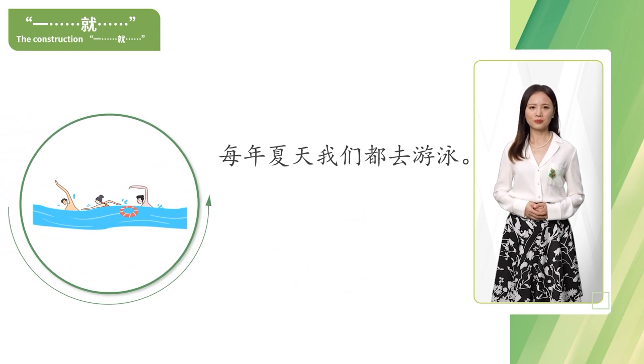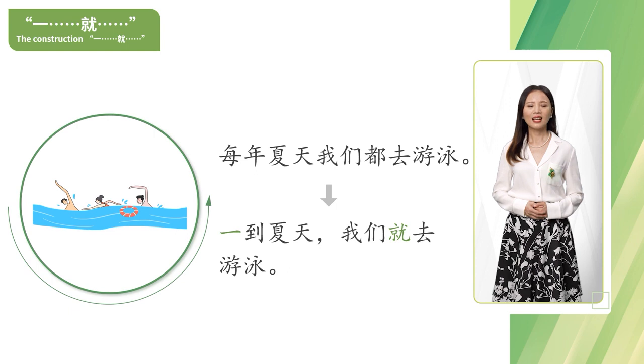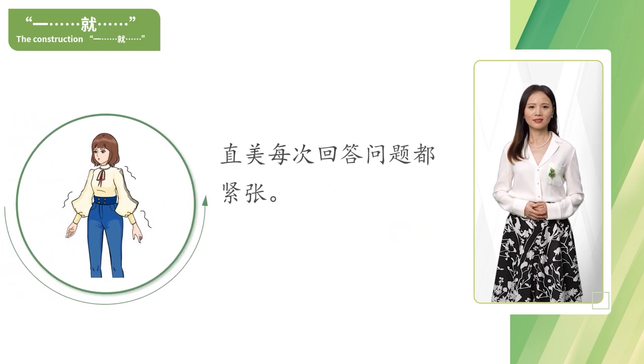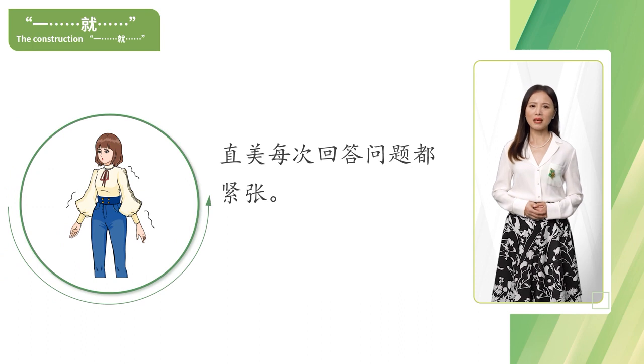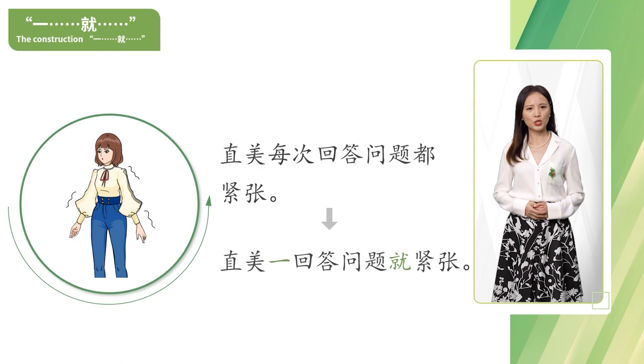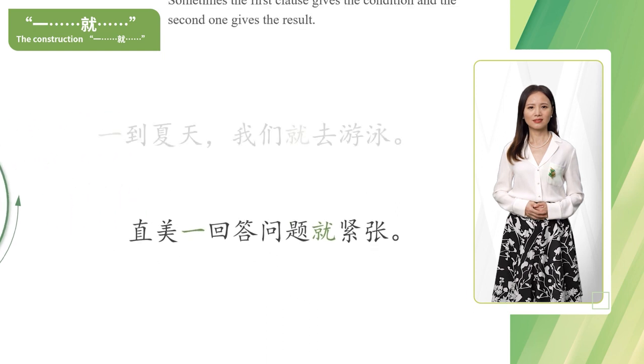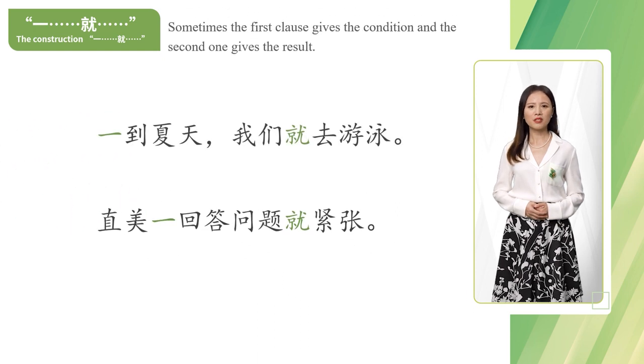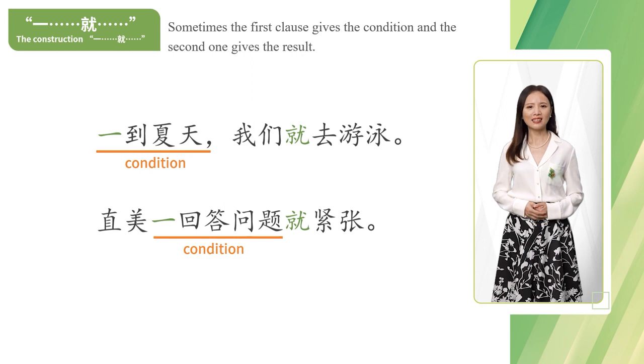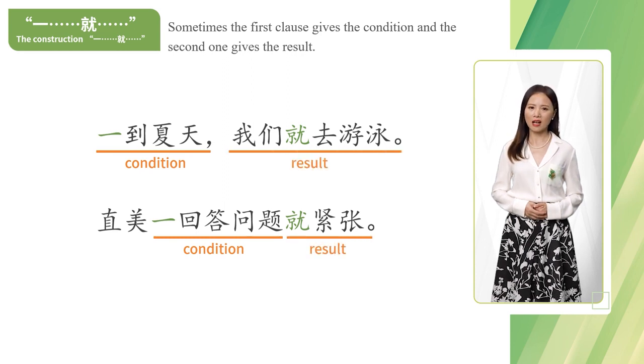每年夏天我们都去游泳,我们可以说一到夏天我们就去游泳。只美每次回答问题都紧张,我们可以说只美一回答问题就紧张。Sometimes the first clause gives the condition and the second one gives the result.